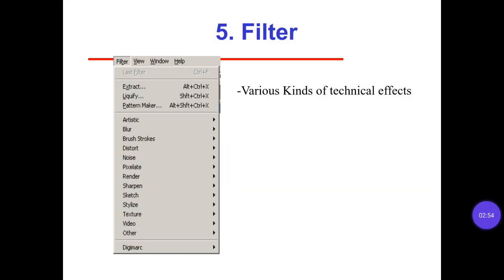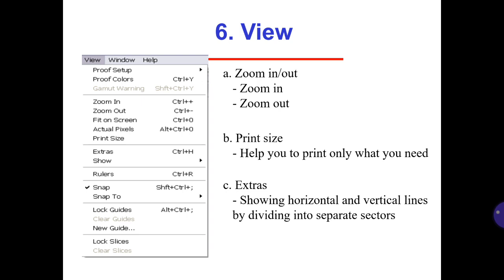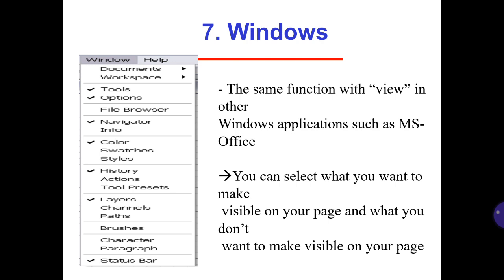Number 5 is Filter — various kinds of technical effects. Number 6 is View. A: Zoom In and Zoom Out. B: Print Size — helps you to print only what you need. C: Extras — showing horizontal and vertical lines by dividing into separate sectors. Number 7 is Windows — the same function as View in other Windows applications such as MS Office. You can select what you want to make visible on your page and what you don't want to make visible.